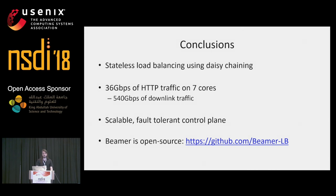In conclusion, we've presented Beamer, a stateless load balancer that uses daisy chaining to ensure connection affinity. One mux can do 36 gigabits per second of upstream traffic on seven cores, which roughly translates to 450 gigabits per second of downlink traffic. It has a scalable and fault-tolerant control plane, and it's available on GitHub. Please find us during the post session — thanks for your attention, and I'll be happy to take questions.